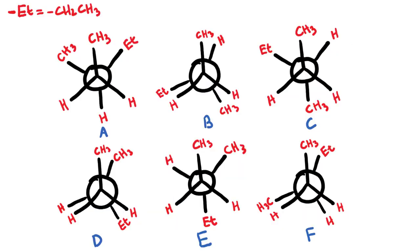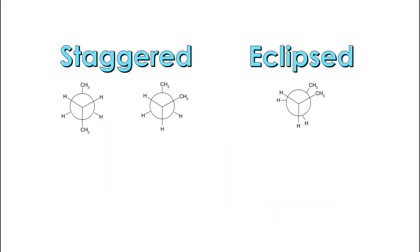When you're trying to compare multiple Newman projections that are staggered, or multiple that are eclipsed, you're going to want to compare the steric strain. A staggered Newman projection means that the groups on the front carbon are not going to be overlapping the groups that are attached to the back carbon.